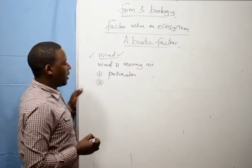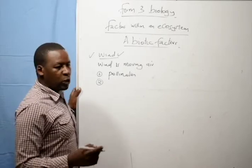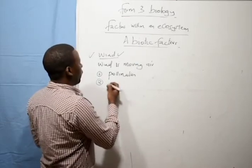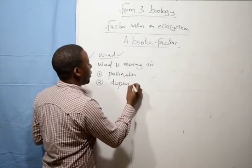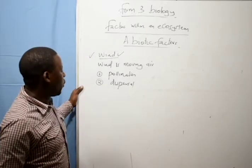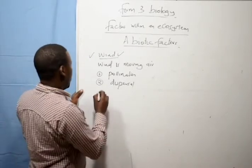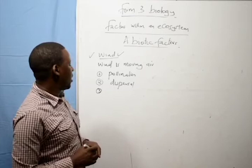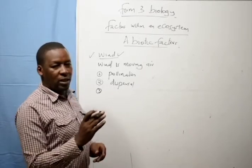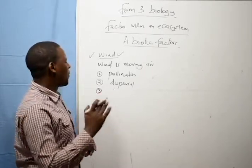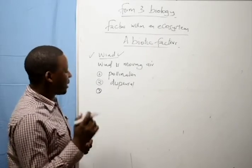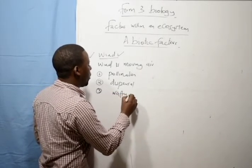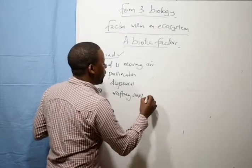The second important is when fruits are formed and seeds are formed, they need to be dispersed from the mother plant to other areas. So wind is an agent of dispersal. So wind is an agent of fruit and seed dispersal. Number three, when animals like lions hunt, they face the direction of the wind and then the wind wafts smell so that the predators are able to hunt. So wind aids in wafting smell or carrying smell during predation.